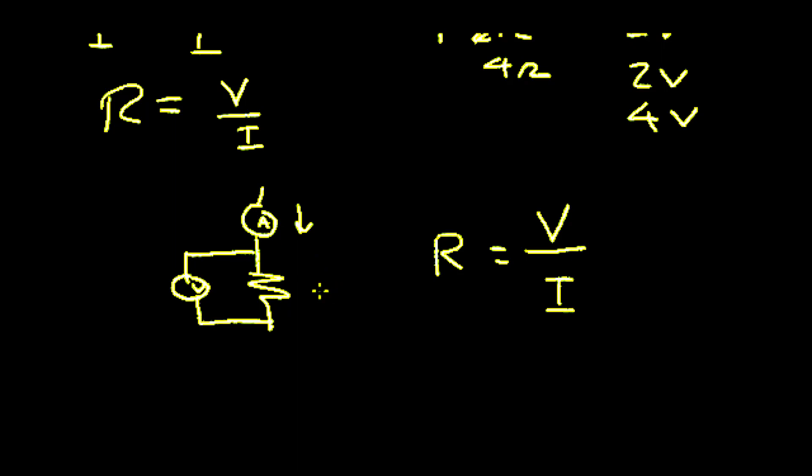An infinite resistor would be zero current. So if I is equal to zero, in this case V divided by zero equals an infinite resistance or an open circuit.